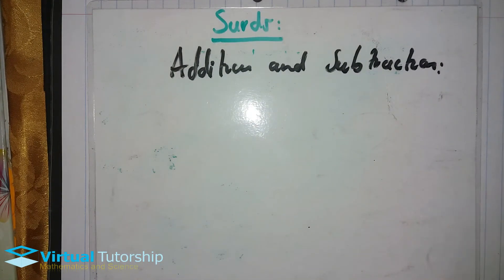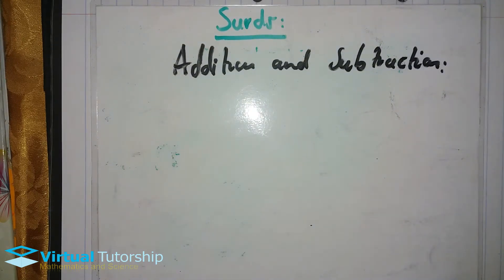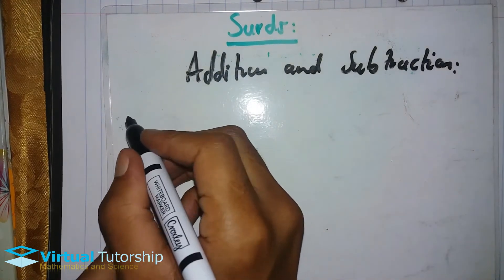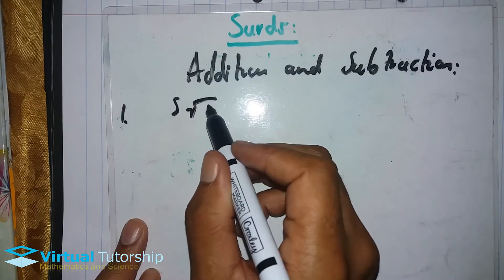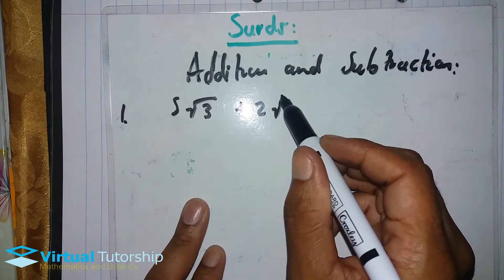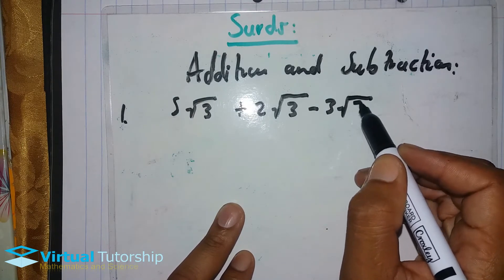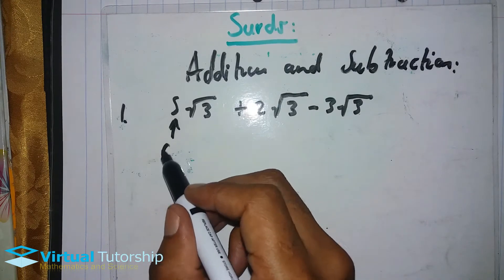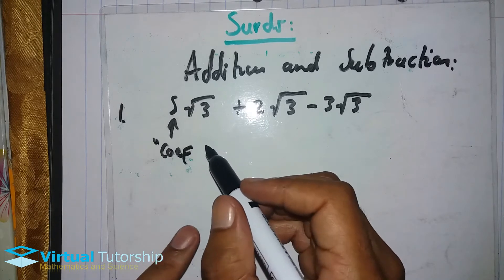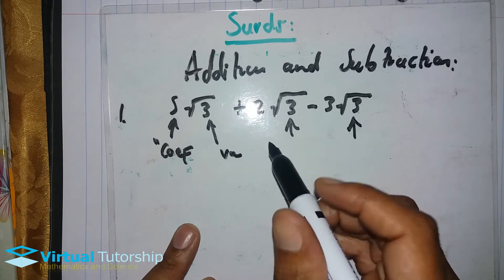In this video, the addition and subtraction of surds is the same thing as adding and subtracting like terms. For example, 5√3 plus 2√3 minus 3√3. The number in front is the coefficient, and the root part is like a variable.